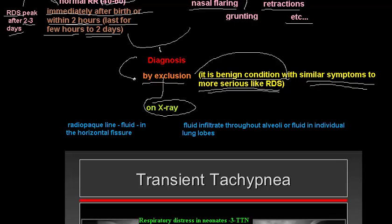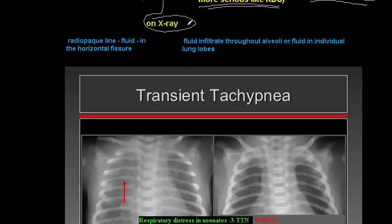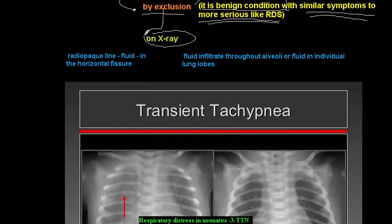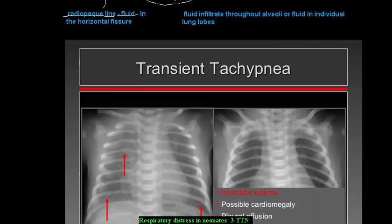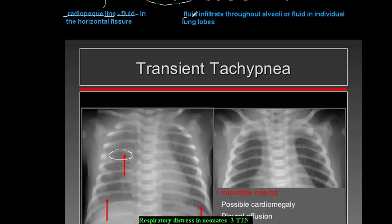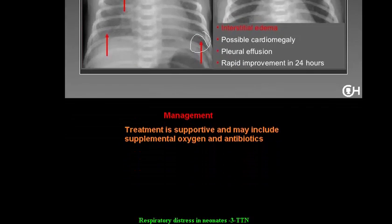On X-ray you can see evidence of the presence of fluid in the lung. You can see a radio-opaque line — fluid in the horizontal fissure. Here we can see a radio-opaque line of fluid in the horizontal fissure. You can also see fluid infiltrates throughout the lung lobes, and here we can see pleural effusion and infiltration of fluid.